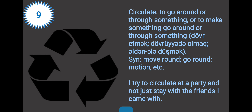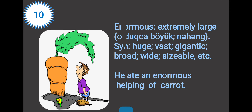Word nine: circulate. Circulate is to go around or through something, or to make something go around or through something. It's translated into Azerbaijani as 'dövr etmək', 'dövrdə olmaq', 'əldən düşmək', 'fırlanmaq'. The synonyms are move around, go around, motion, etc. For example: I try to circulate at a party and not just stay with the friends I came with.